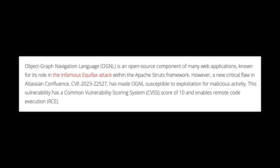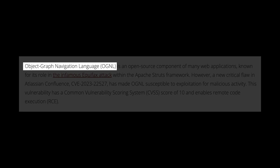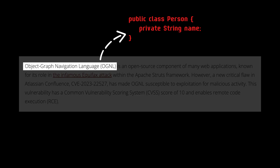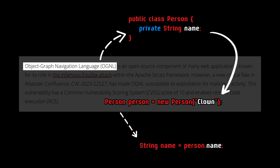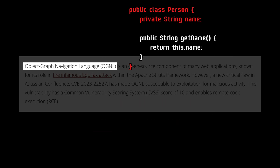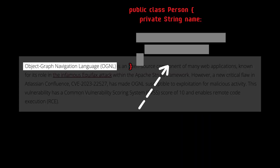Let's digest the introductory paragraph of the technical analysis. The first technology involved is Object Graph Navigation Language. This allows accessing and manipulating Java objects dynamically in a much simpler way. For example, look at this small Java class called Person. If we create an object and try to access any private properties, we will get an error. We need a getter method to allow us to access it. One benefit of expression languages like OGNL is it eliminates boilerplate code like this. Instead of using different methods to access an object's property, it allows them to be accessed in dot notation.